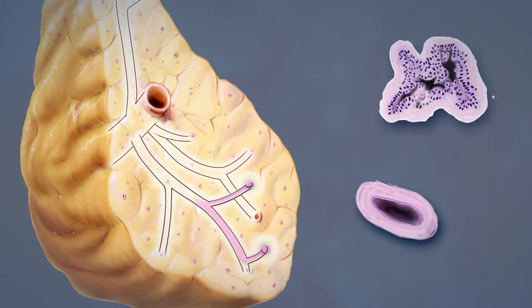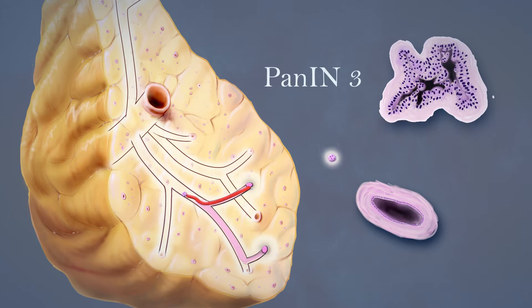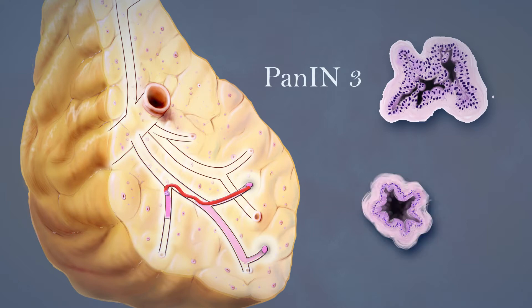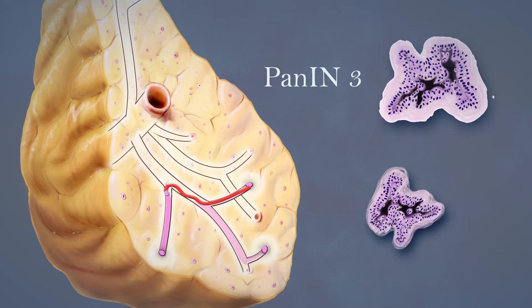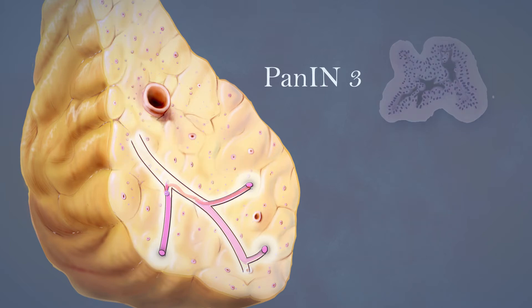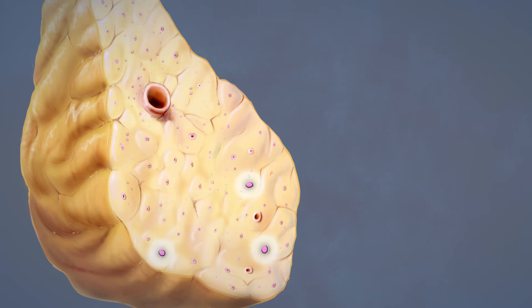Cells in other PanIN lesions, particularly the higher-grade PanIN lesions, can bud off and float down the pancreatic duct system. These cells can implant on a distant duct and start growing a new PanIN lesion. In these cases, although physically separate, the two PanIN lesions are going to be genetically alike.